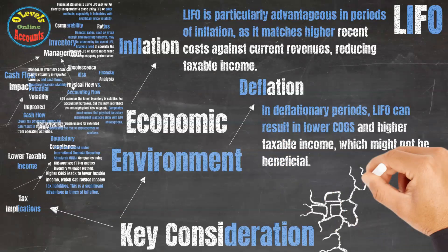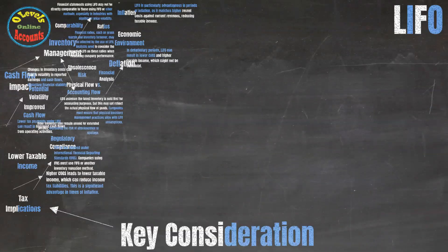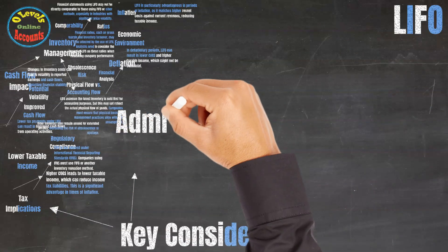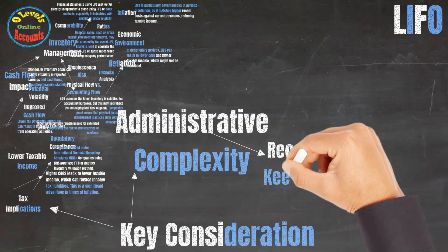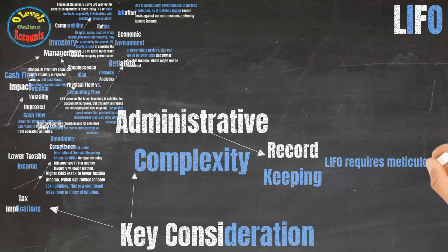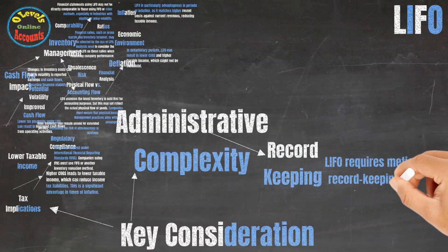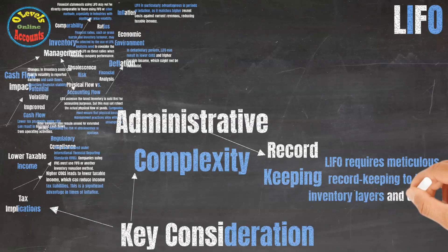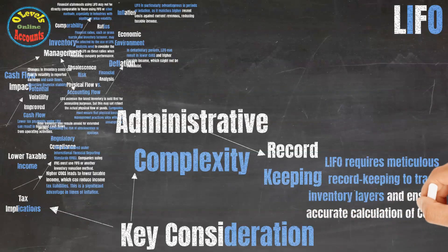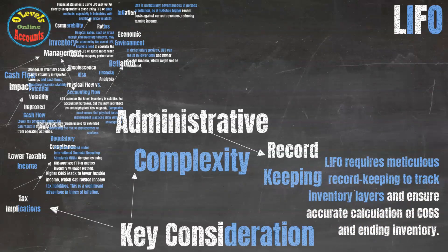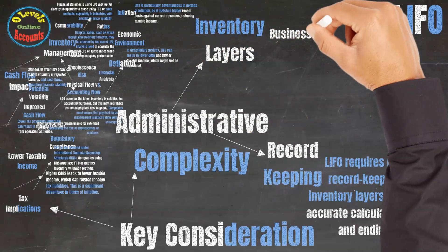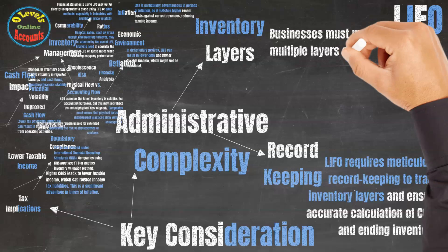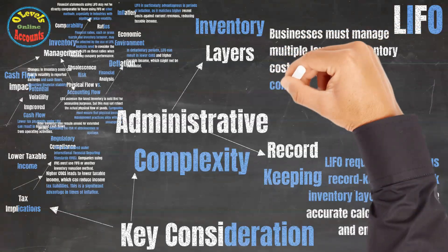The final key consideration is administrative complexity. First, record keeping: LIFO requires meticulous record keeping to track inventory layers and ensure accurate calculation of cost of goods sold and ending inventory. Second, inventory layers: businesses must manage multiple layers of inventory costs, which can be complex and time-consuming.